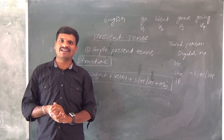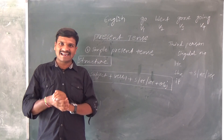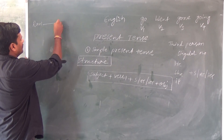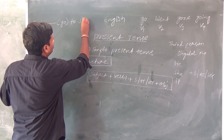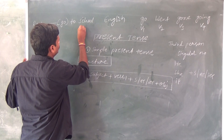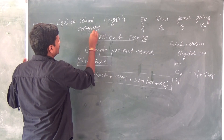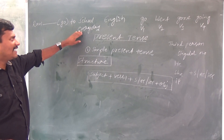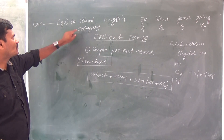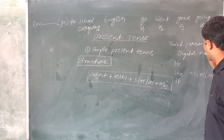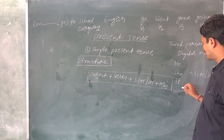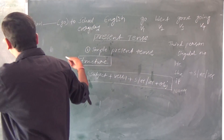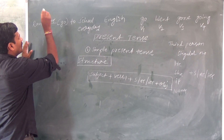Now the exam model. Here is one example: 'Ravi __ go to school every day.' Every day means this is a daily activity, so it comes under simple present tense. Ravi is third person singular number — it's a name. So we add s or es to the verb. The answer is: 'Ravi goes to school every day.' This is the exam decoded.